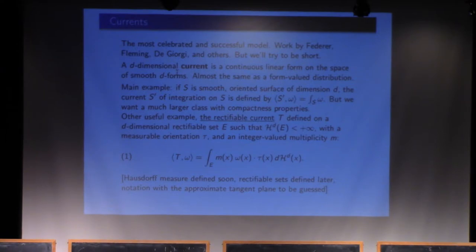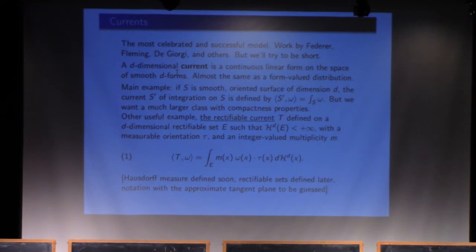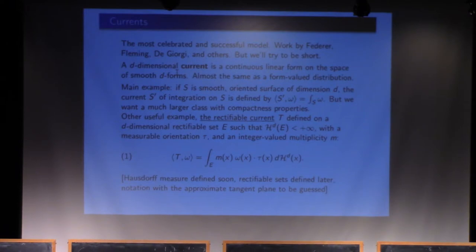Last attempt at doing currents. A d-dimensional current is just a distribution acting on forms. The typical examples we'll encounter are not horrible distributions — they're going to be measures acting on forms. So instead of just a measure with positive values, a current has values in the dual of d-dimensional forms. A d-dimensional current is a continuous linear form on the space of smooth d-forms: dx1, dx2, …, dxd, and sums of such things.